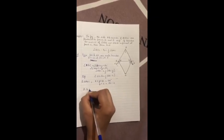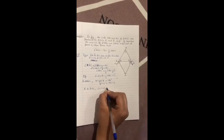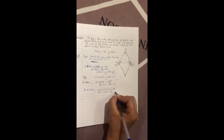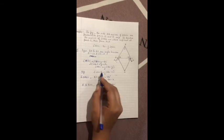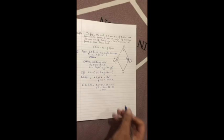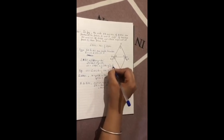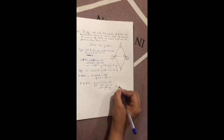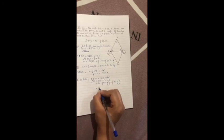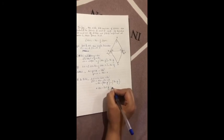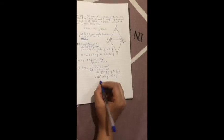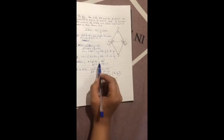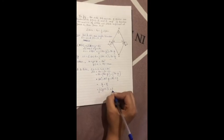In triangle BOC, angle 2 plus angle 3 plus angle O is equals to 180 degree. So angle O is 180 minus angle 2 minus angle 3. That is 180 minus, angle 2 is 90 minus Y upon 2, and angle 3 is 90 minus Z upon 2. So 180 minus 90 plus Y upon 2 minus 90 plus Z upon 2. So this will cancel out, we will be left with Y upon 2 plus Z upon 2, that is half Y plus Z.